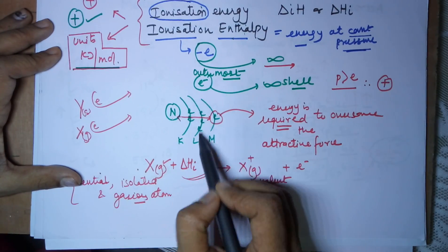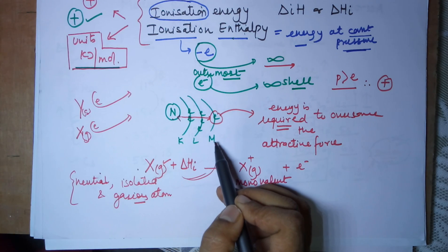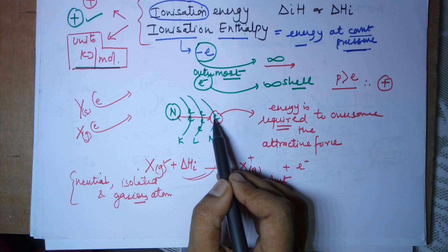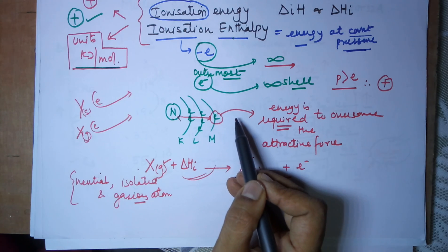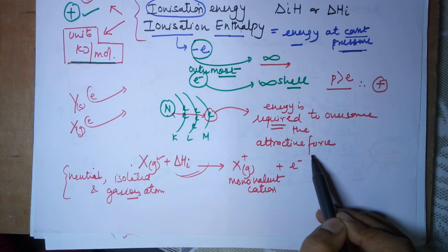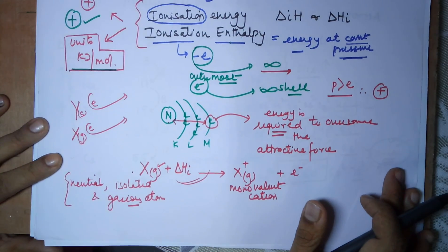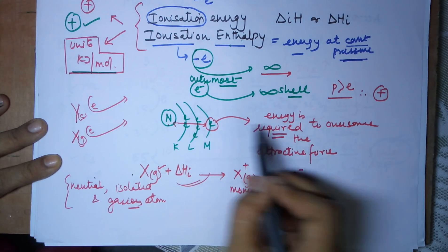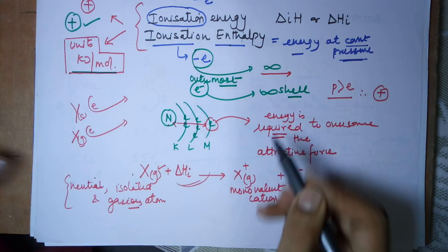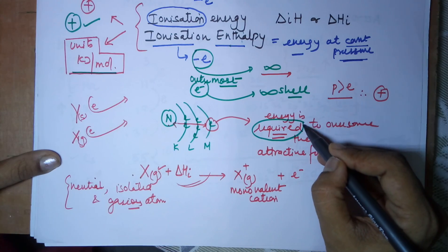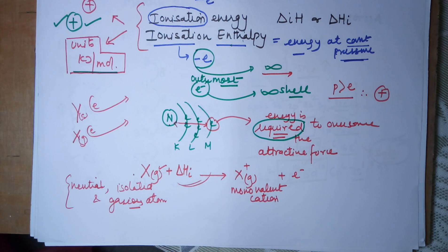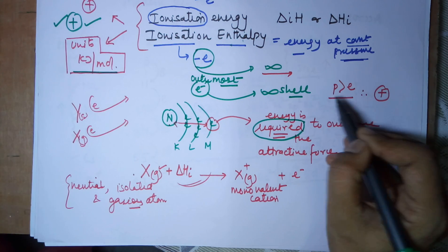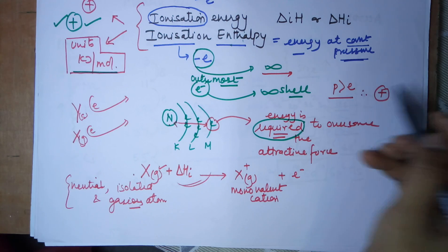If you have the nucleus with shells K, L, and M around it, which electron would be easiest to remove? The one in the outermost shell, because it is farthest from the nucleus. The attractive pull that this electron faces is less, so the energy required to overcome this attraction force is less, making ionization energy lower and electron removal easier. Since we are requiring energy to remove the electron, the value is always positive. After the electron is removed, protons outnumber electrons, so a positively charged ion — a cation — is formed.